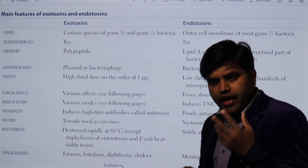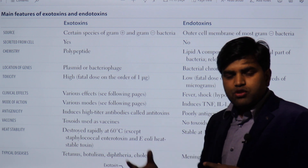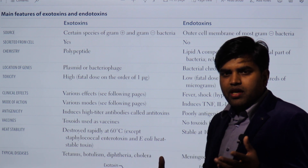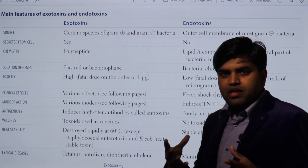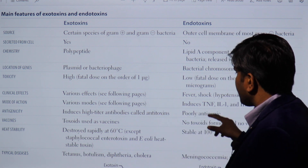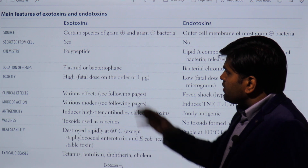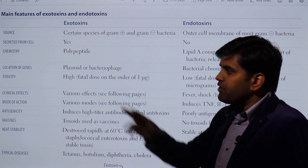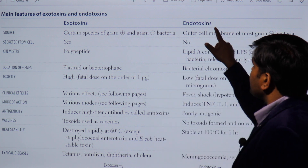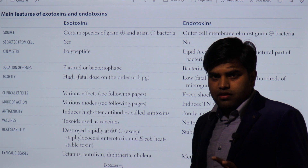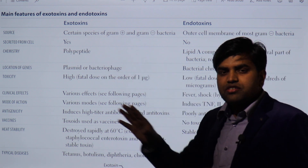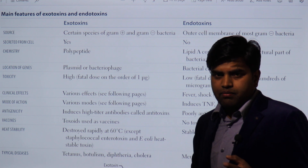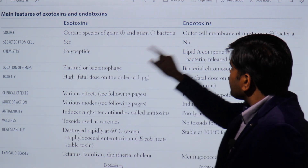Endotoxins are bacterial components exposed when the bacterium is killed. Once the bacterium dies, these components enter the environment, mainly the bloodstream, and activate three systems: macrophage activation, the complement pathway, and the tissue factor coagulation pathway. This causes DIC and side effects like fever, shock, and DIC. Exotoxins are released by both gram-positive and gram-negative bacteria, but endotoxins are released only from the outer cell membrane of gram-negative bacteria.